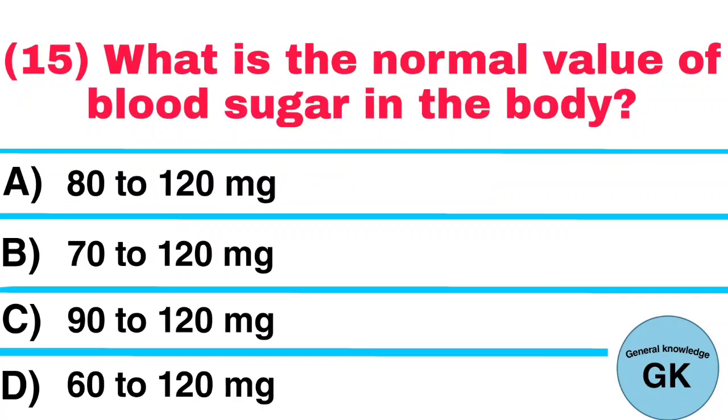Question number 15. What is the normal value of blood sugar in the body? A. 80 to 120 mg. B. 70 to 120 mg. C. 90 to 120 mg. D. 60 to 120 mg.